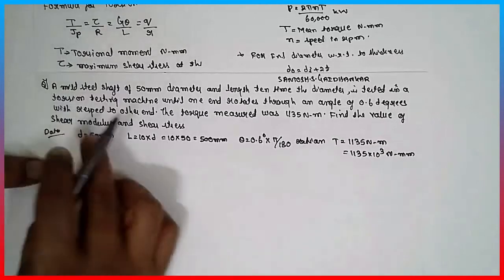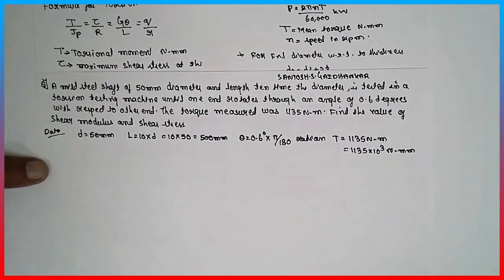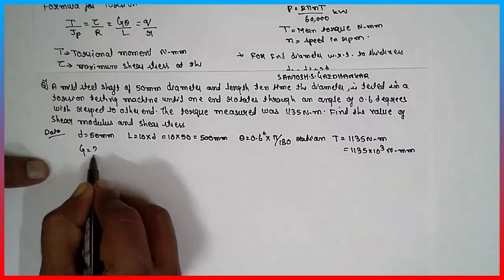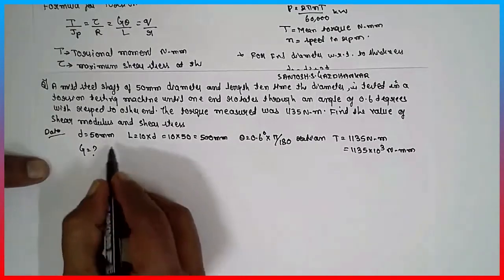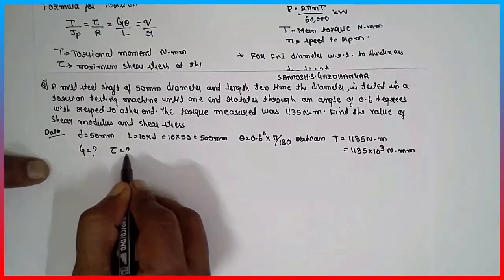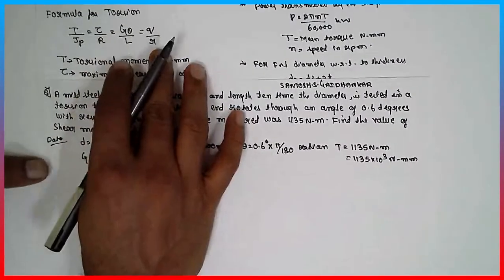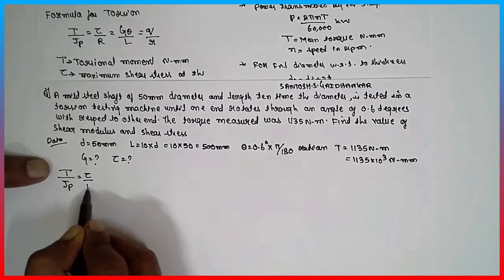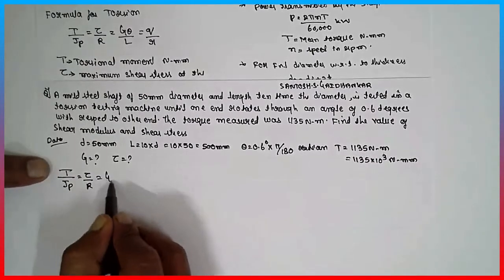Find the value of shear modulus and shear stress. Shear modulus G and shear stress tau we have to find out. This is the formula I am going to use: T divided by Jp is equal to tau divided by R is equal to G theta divided by L.